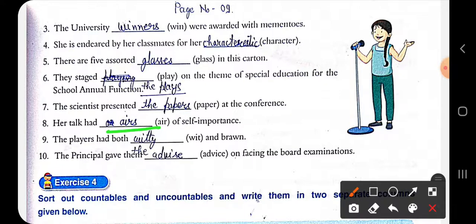Ninth sentence: 'The players had both wit and brawn.' Tenth sentence: 'The principal gave the advice on facing the board examination.'